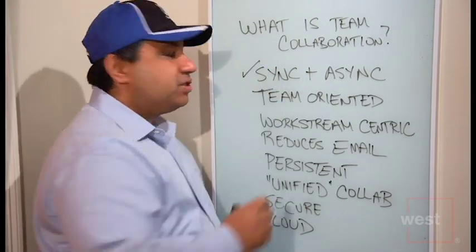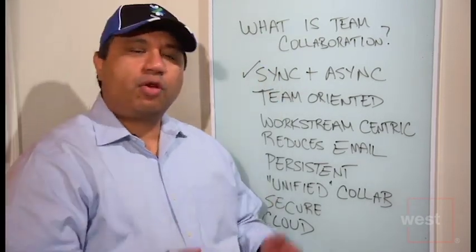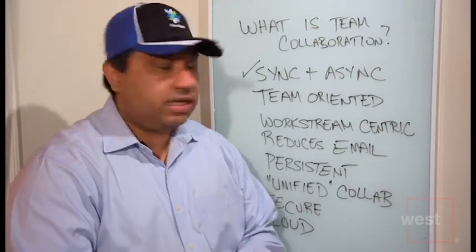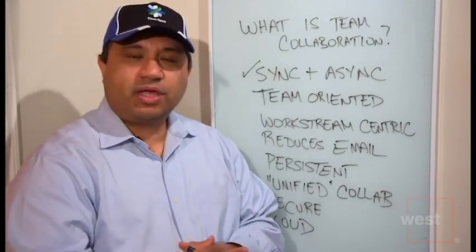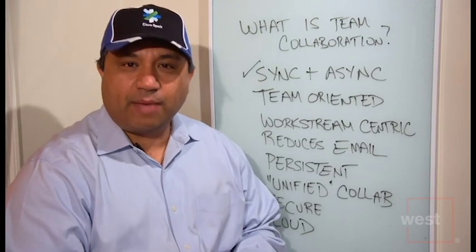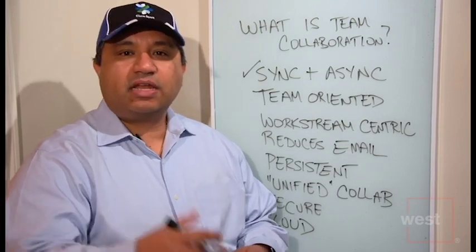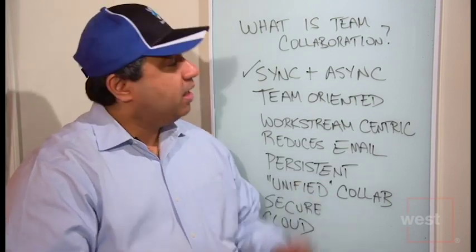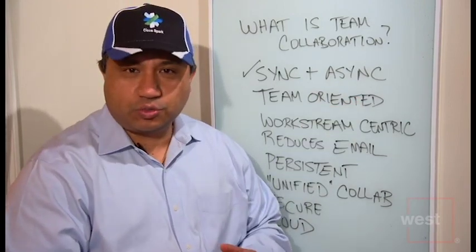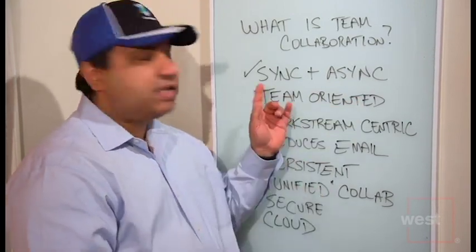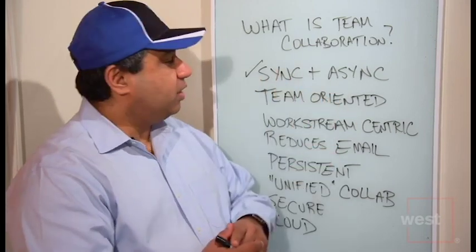The first element of team collaboration is it involves both synchronous and asynchronous communications. There are needs for both. If I need an answer from somebody immediately, I want to be able to use synchronous communications. However, if I have the time to wait and I want to be able to send a message and have somebody respond tomorrow, asynchronous works just as well. So team collaboration encompasses the best of both sync and async communications.